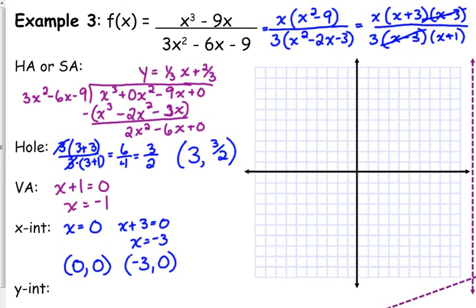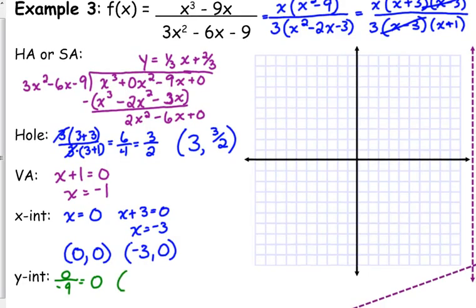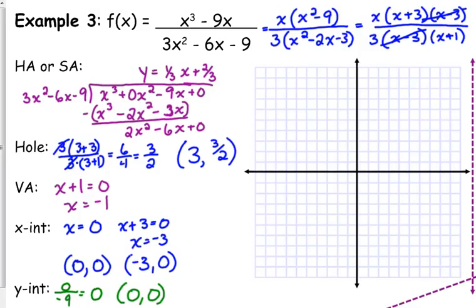Y-intercept, we plug 0 in. You can do it in either version. If we do it in the original, we get 0 on the top and we get negative 9 on the bottom. That's okay. We can divide 0 by another number, but we get 0. Guess what? If your x-intercept is 0, 0, your y-intercept is 0, 0. Because if you're on the origin, you're on both axes at the same time. So technically, one of our x-intercepts is the same as the y-intercept.